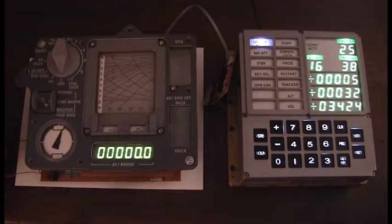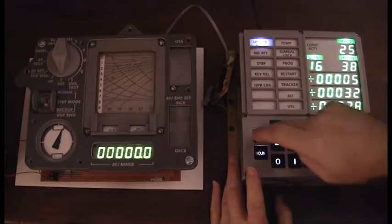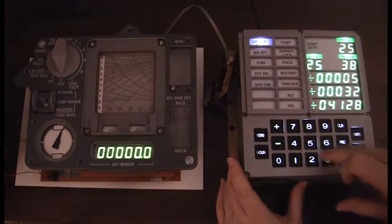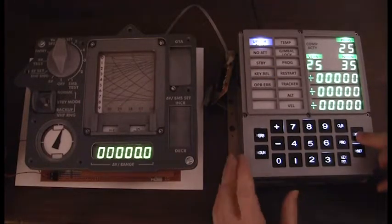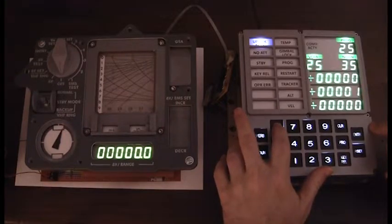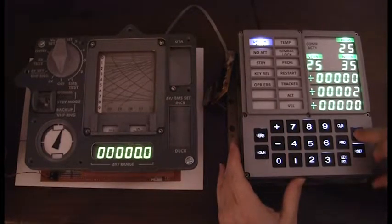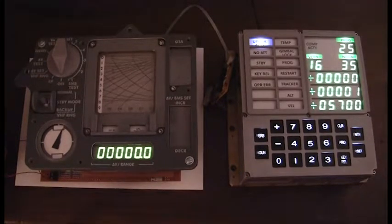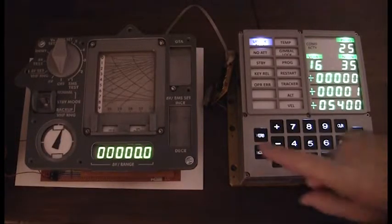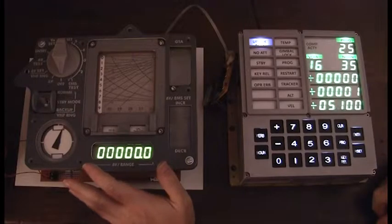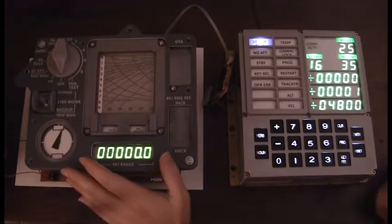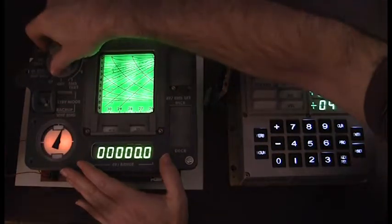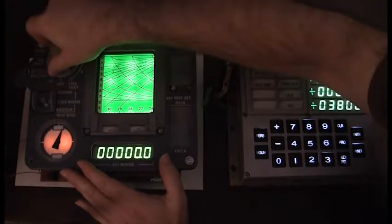So, what that would do, that would allow me to do something like this. I'll do verb 25, noun 35, and if I wanted to set maybe a couple of minutes here, and get that started. Well, at one minute, it will engage the relay, and then I can move this to either the entry mode or the delta V mode, and then at that point, the diskey will have control over the EMS.